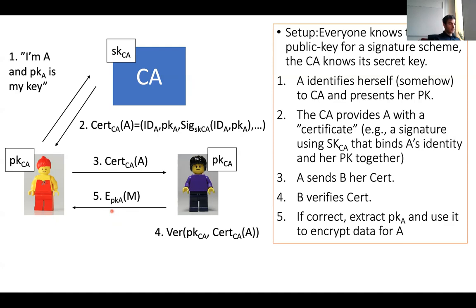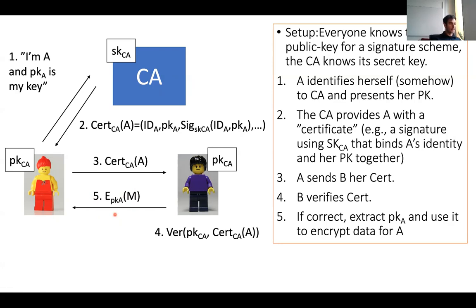The main thing to notice about certificate authorities: the CA never learns the secret key used for the communication. Even if the CA can eavesdrop the ciphertext, it will not have the means to decrypt it and learn the message M. This is a big difference between the CA and the KDC — the KDC knew the session key and could decrypt the message, whereas the certificate authority cannot.